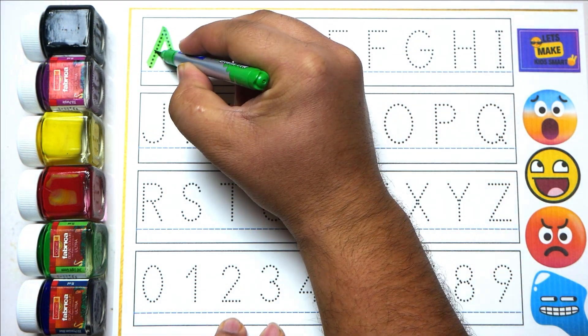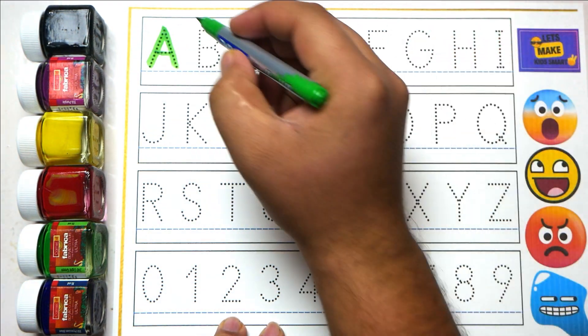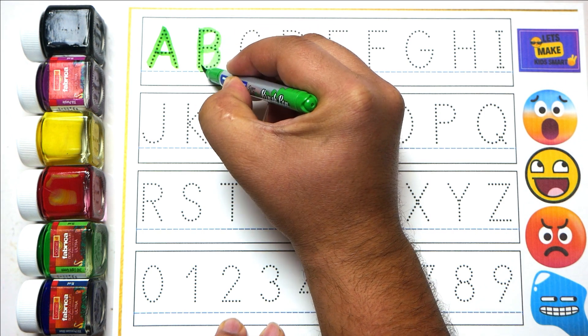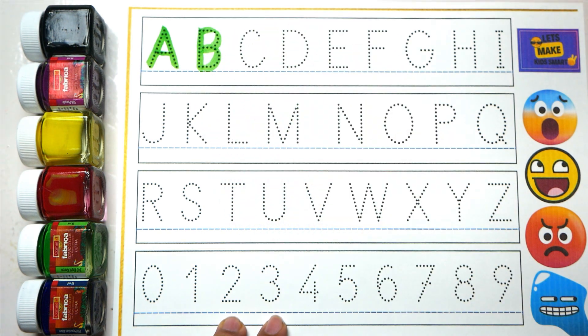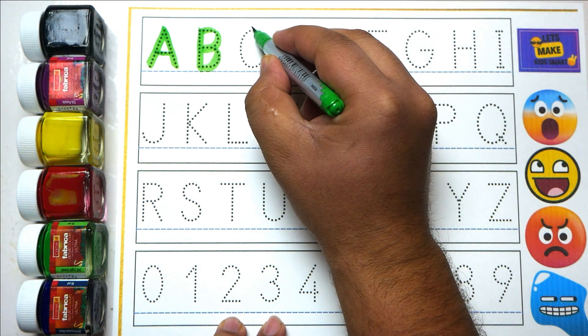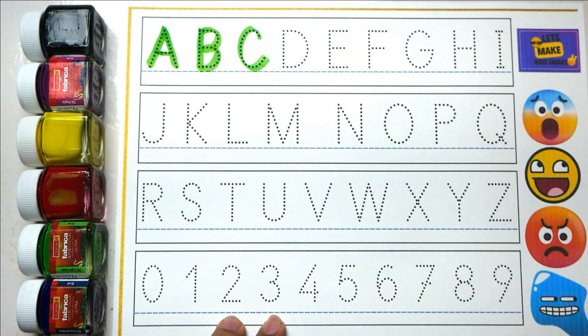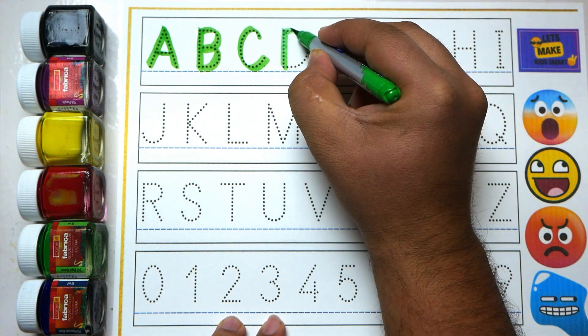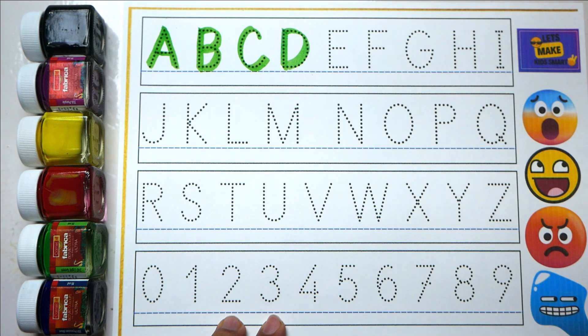A for apple, B for ball, C for cat, D for dog.